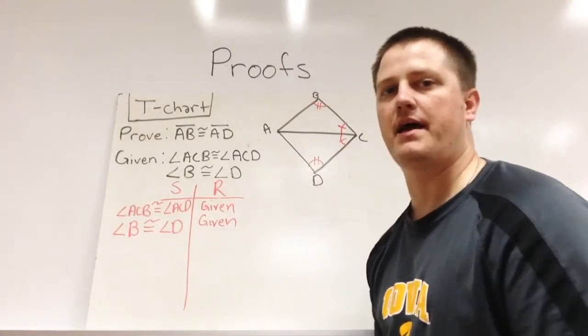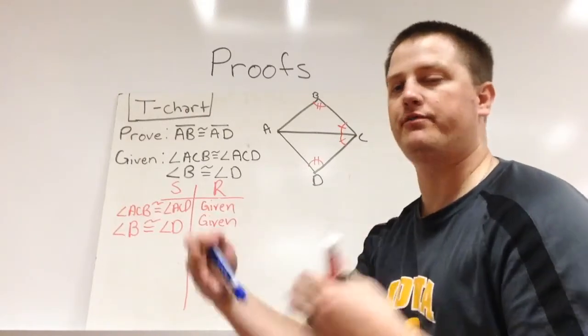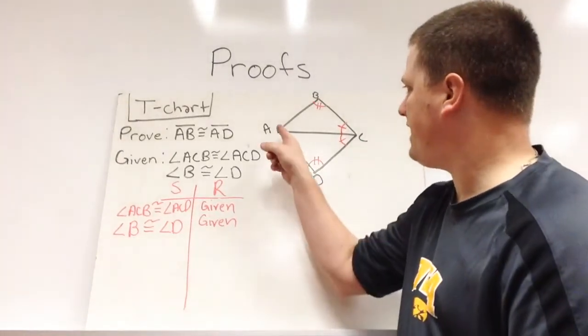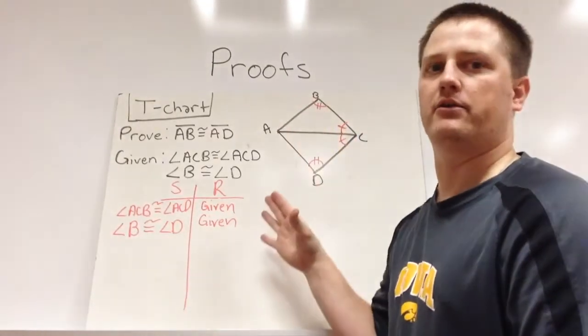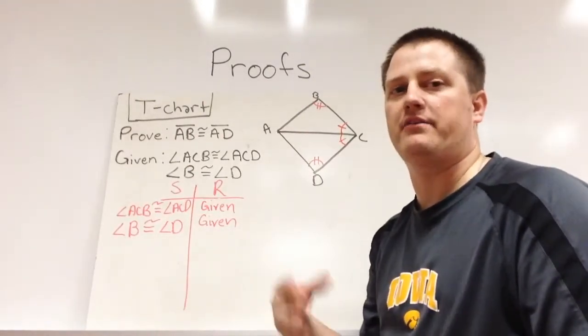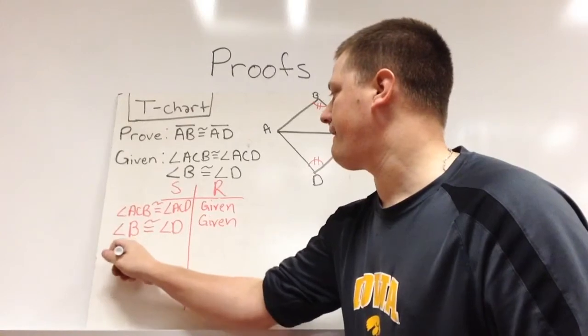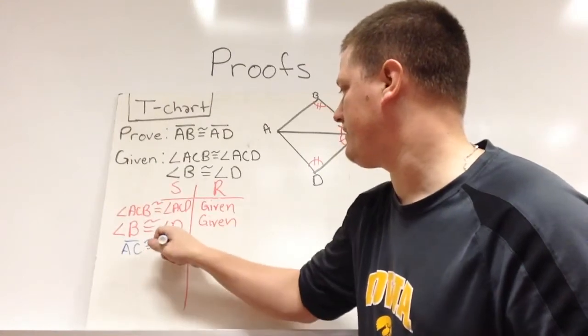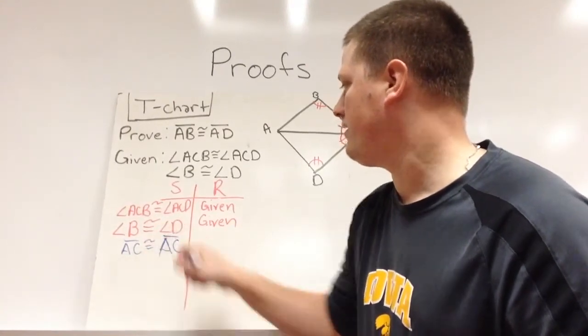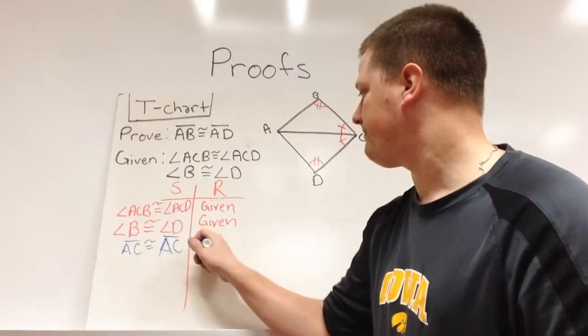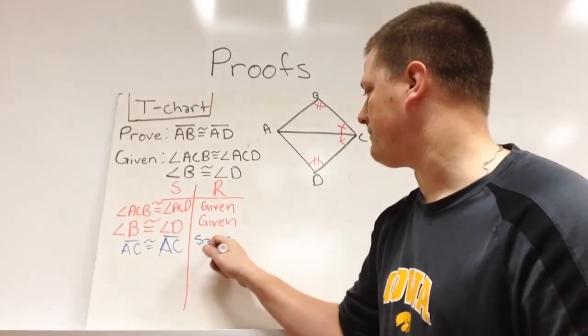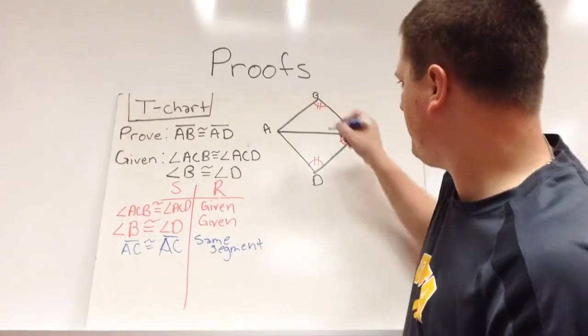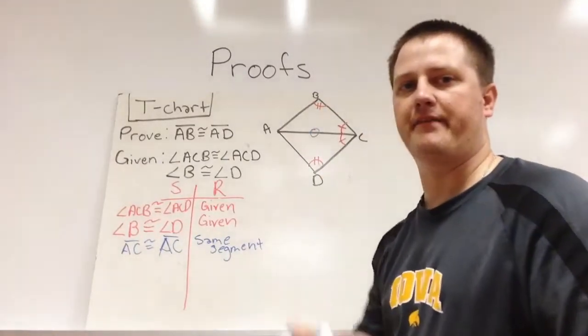In blue, I'm going to put in the things that we're going to try and figure out or are going to be proved as we get more information. Well, one of the things that I can see in this shape is that AC is in both triangles. Well, it's the same segment so it has to be congruent to itself. So AC is congruent to AC. Same segment is my reasoning. When they're the same segment, what we a lot of times do is draw a circle on it. If they were separated, we'd just use tally marks.